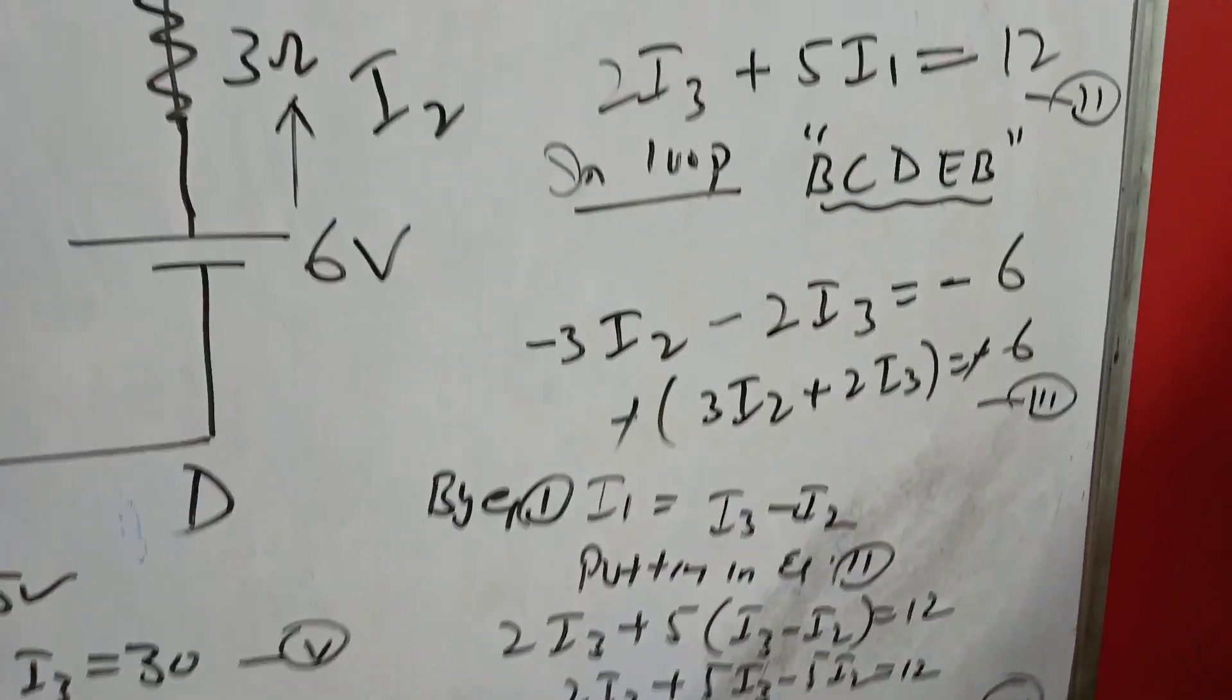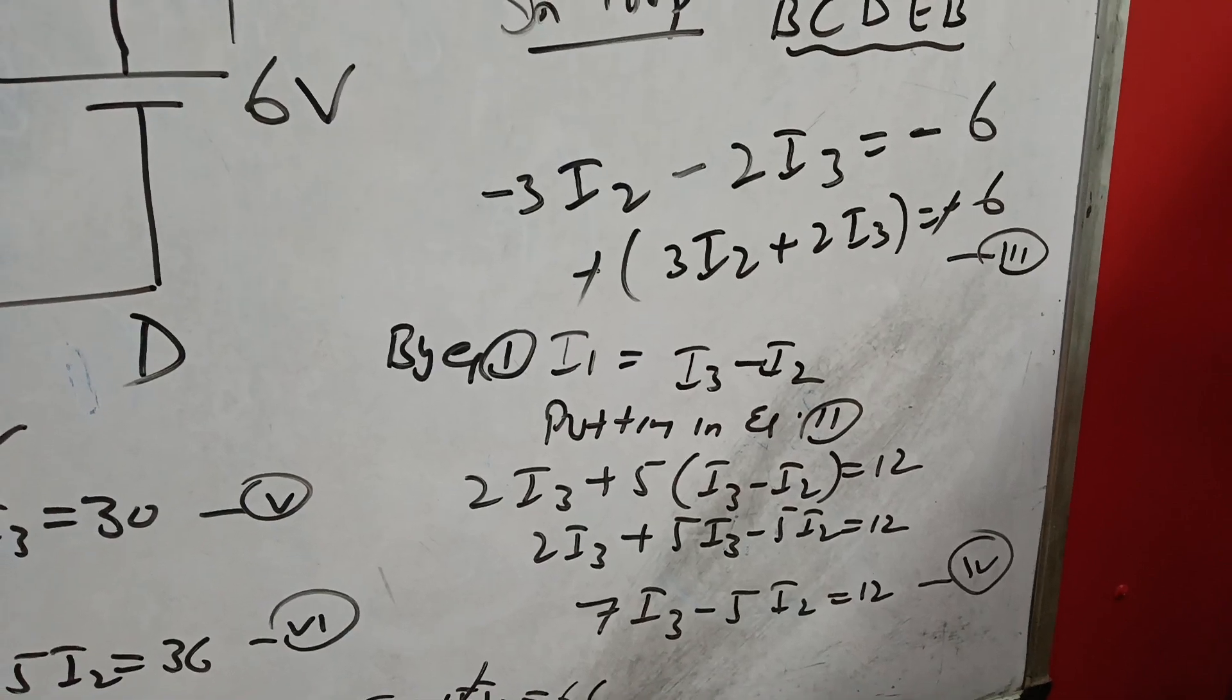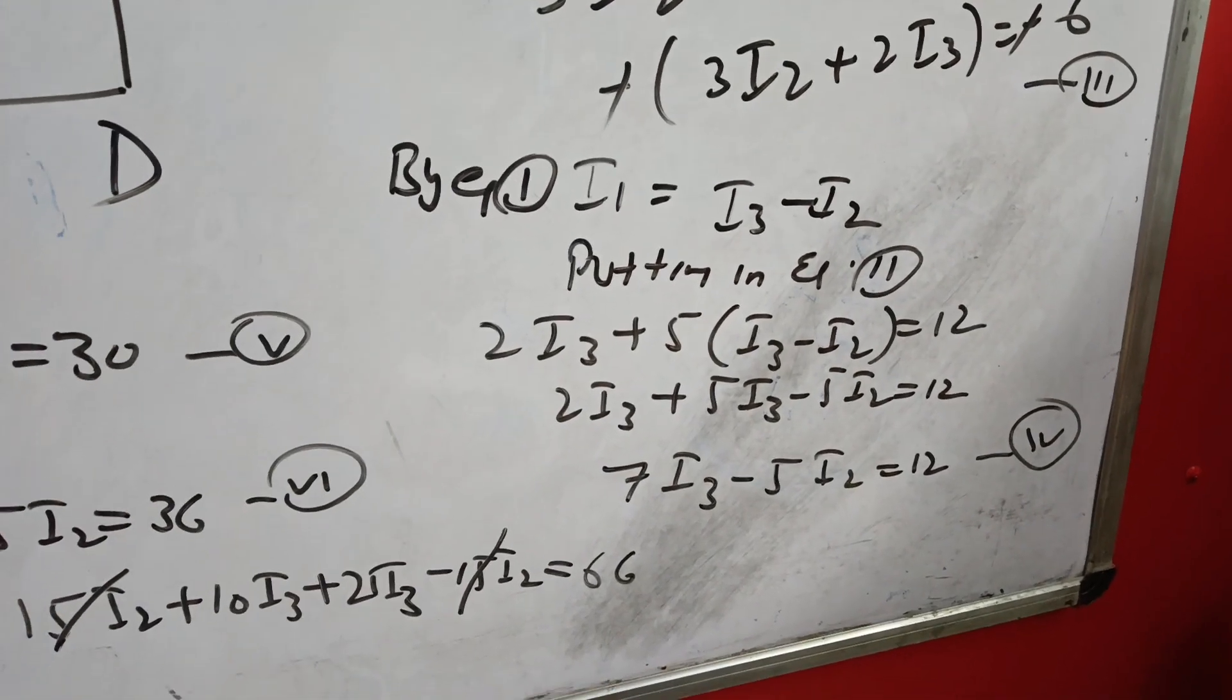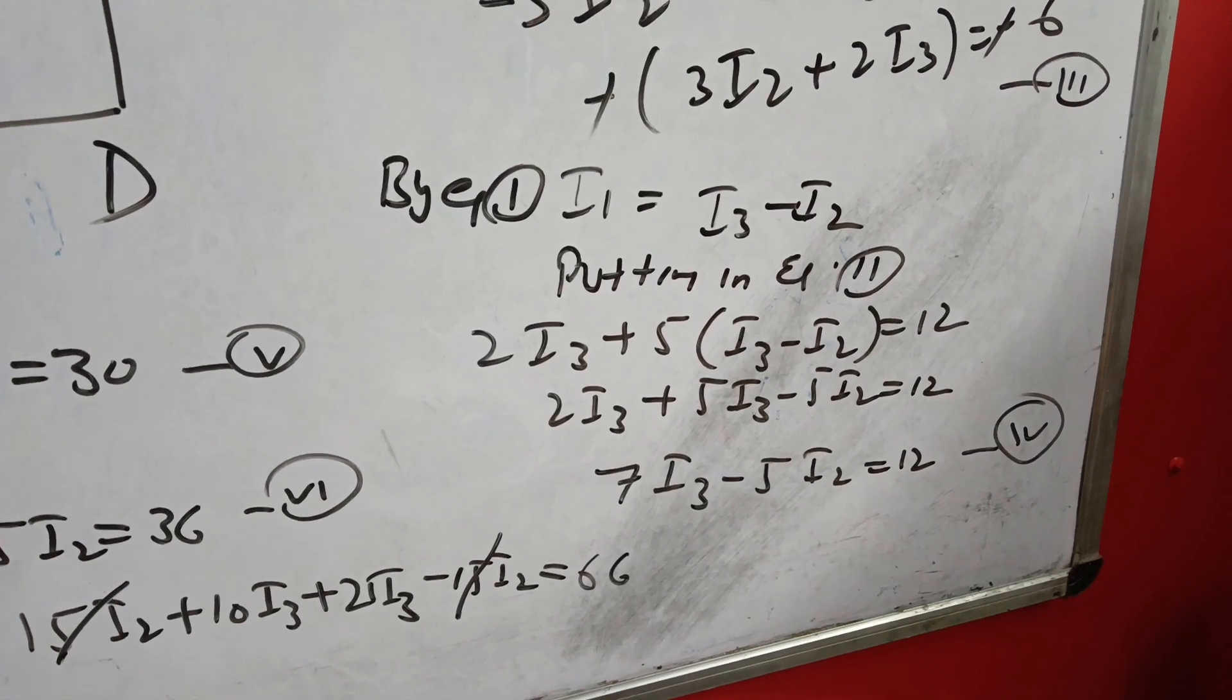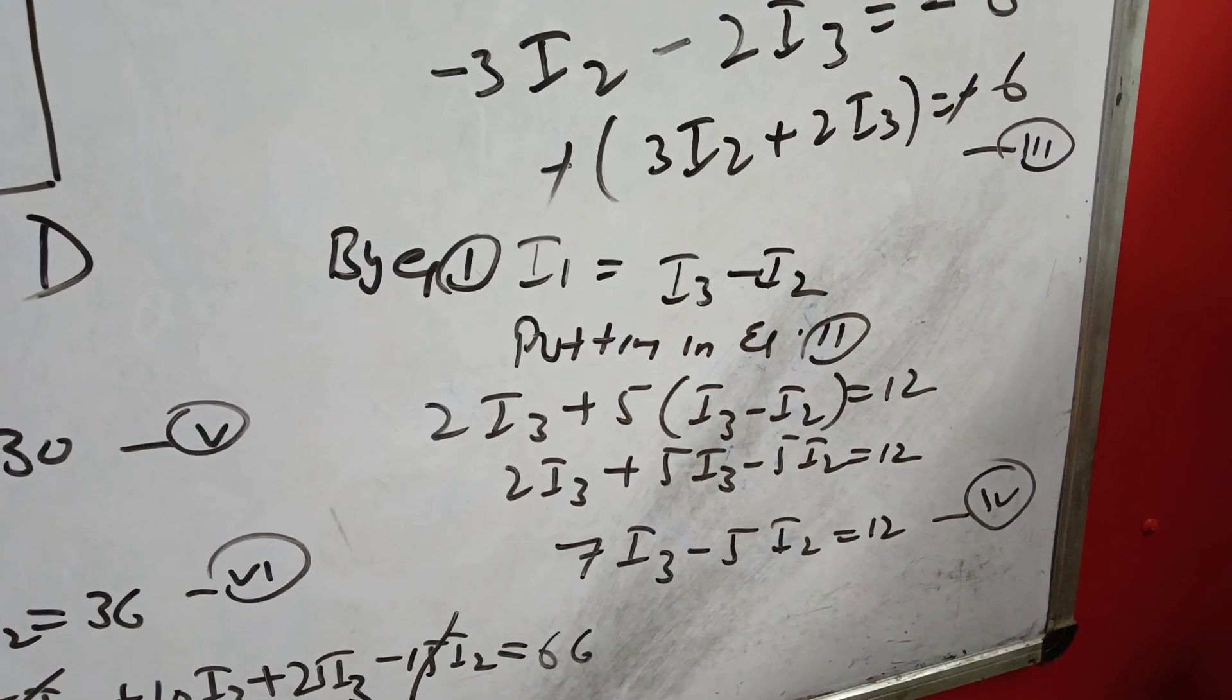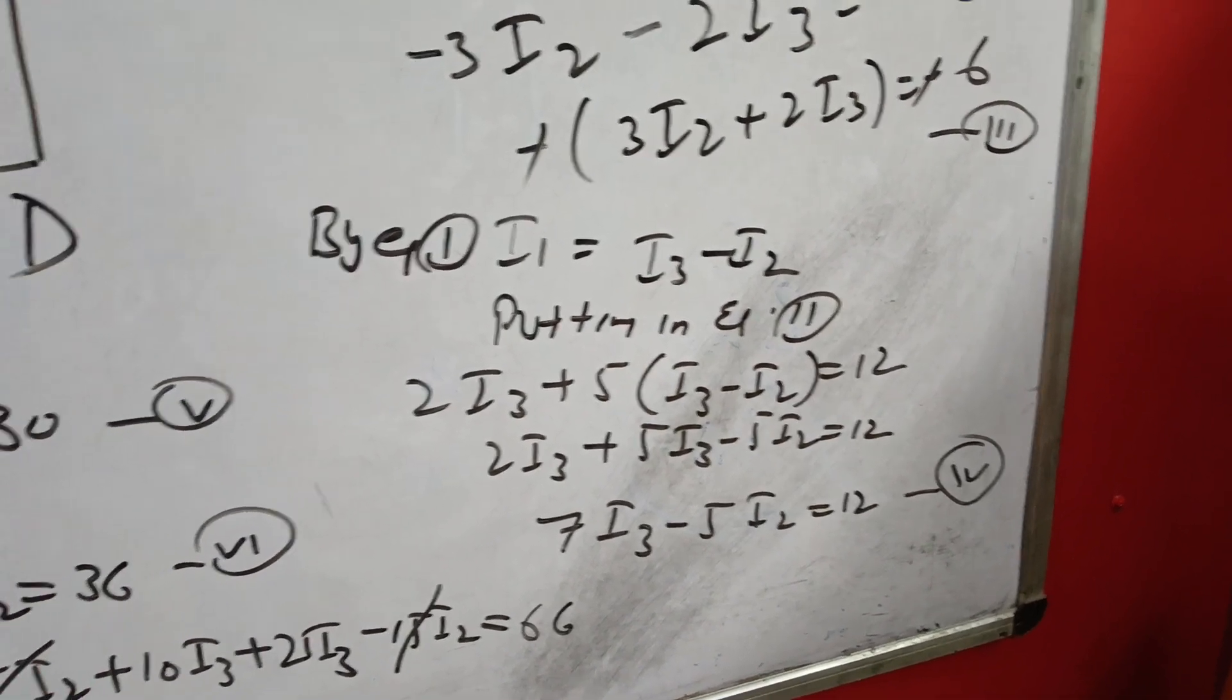Now from equation 1, we know I1 plus I2 equals I3. So we can write I1 equals I3 minus I2. Putting this value in equation 2, we get 2I3 plus 5 into, in place of I1, I3 minus I2, equals 12. On solving this, we get 7I3 minus 5I2 equals 12. This is our fourth equation.